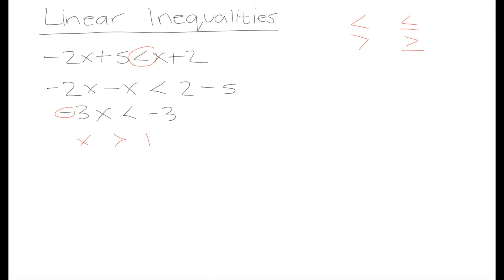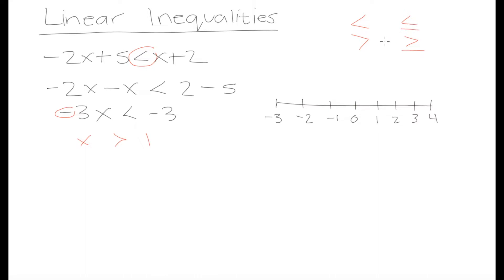We can draw that out on a number line. Let's say we have our number line here with negative 3, negative 2, negative 1, 0, 1, 2, 3, and 4. This inequality says x is greater than 1, but it's not equal to 1. The signs with the extra line underneath imply greater than or equal to, or less than or equal to. Since our x is greater than 1 but not equal to 1, we draw an open circle at 1 and shade all values to the right — all numbers greater than 1, but not exactly equal to 1.